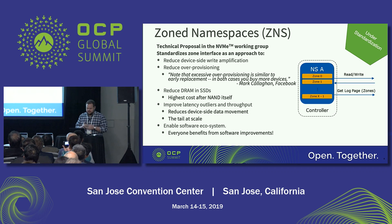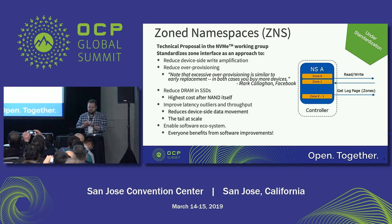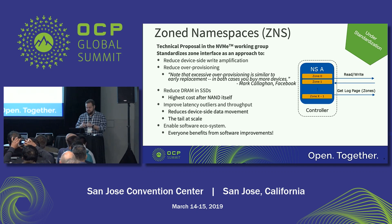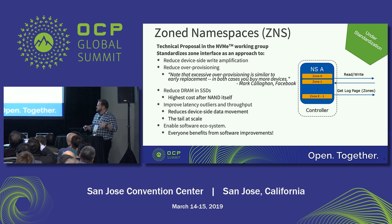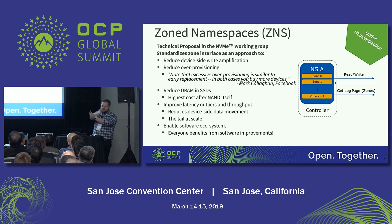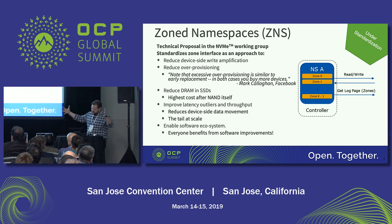So zone namespaces — it's a technical proposal in the NVMe work group and we are working on it weekly. It's approached to have three things: one is to reduce write amplification; another is to reduce overprovisioning. There's a good quote by Mark Callaghan from Facebook: excess overprovisioning is similar to early replacement — in both cases you buy more drives. But if they consolidate, they still have room for more drives, so we are still going to sell drives.